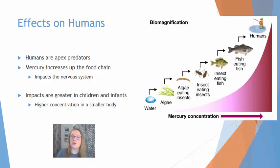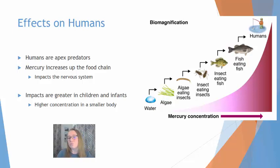Mercury is going to increase as it moves up the food chain, so it biomagnifies and that can impact the nervous system of humans. Children, infants, and fetuses are much more likely to see severe impacts from biomagnification, particularly because you're going to see a higher concentration of these pollutants in their much smaller bodies.